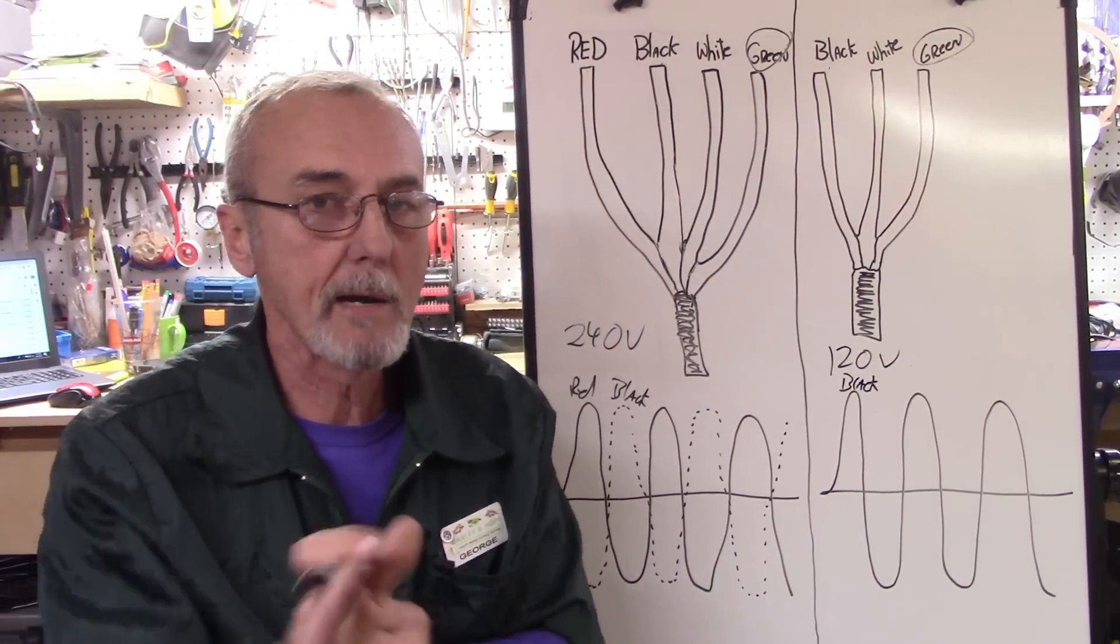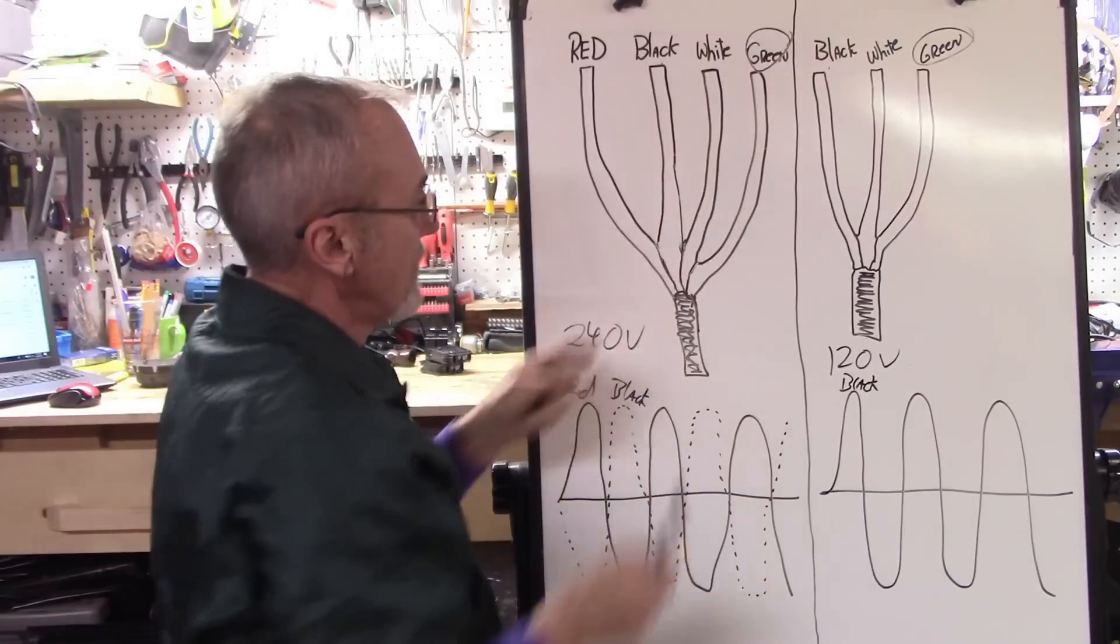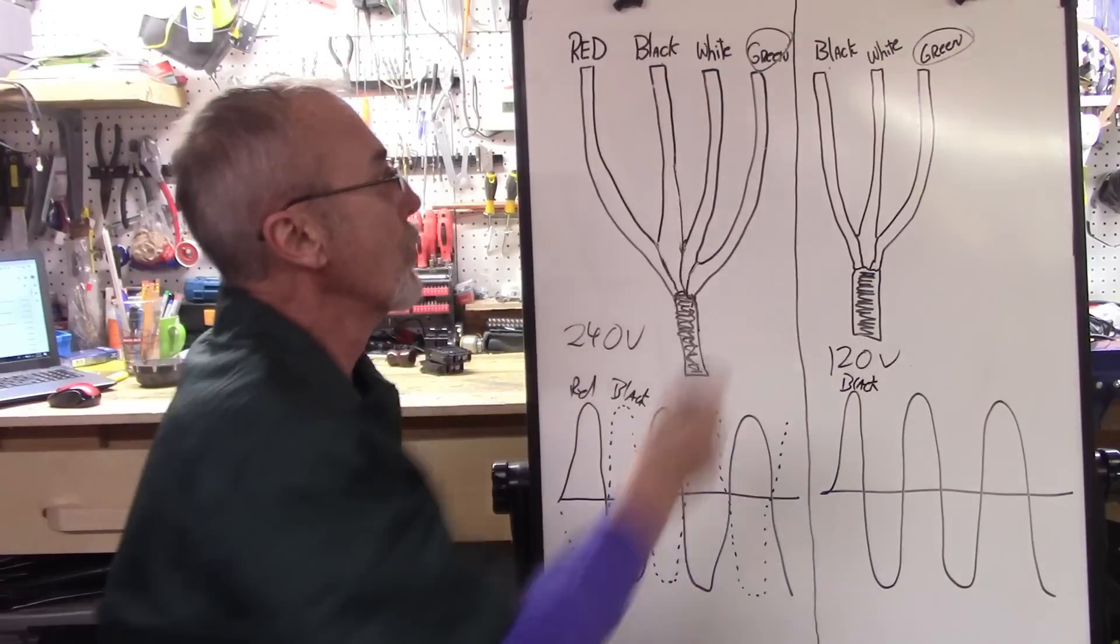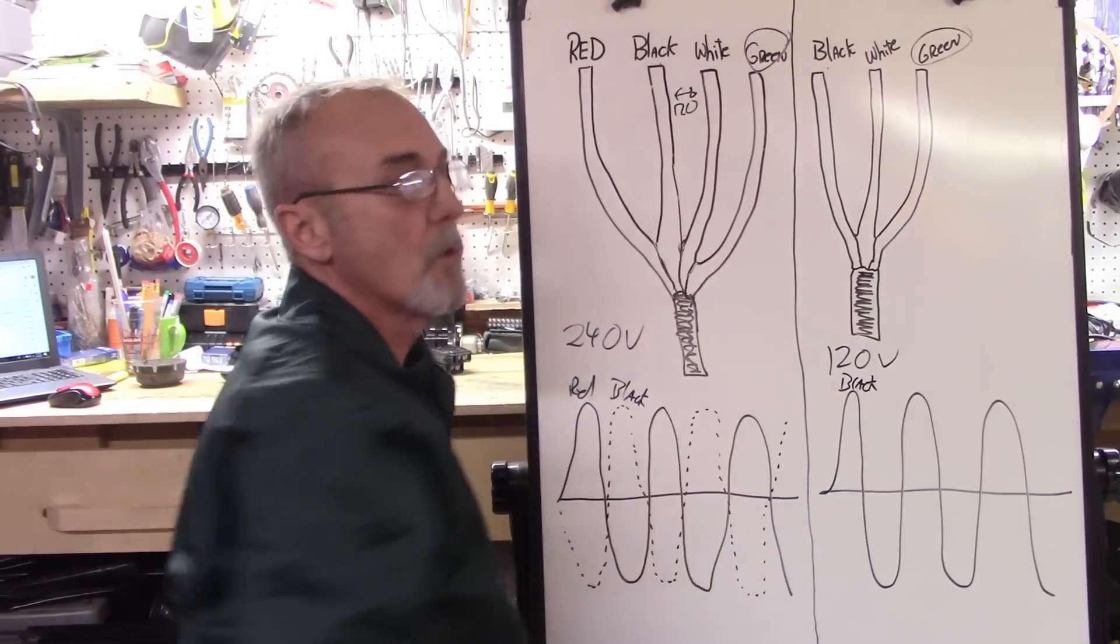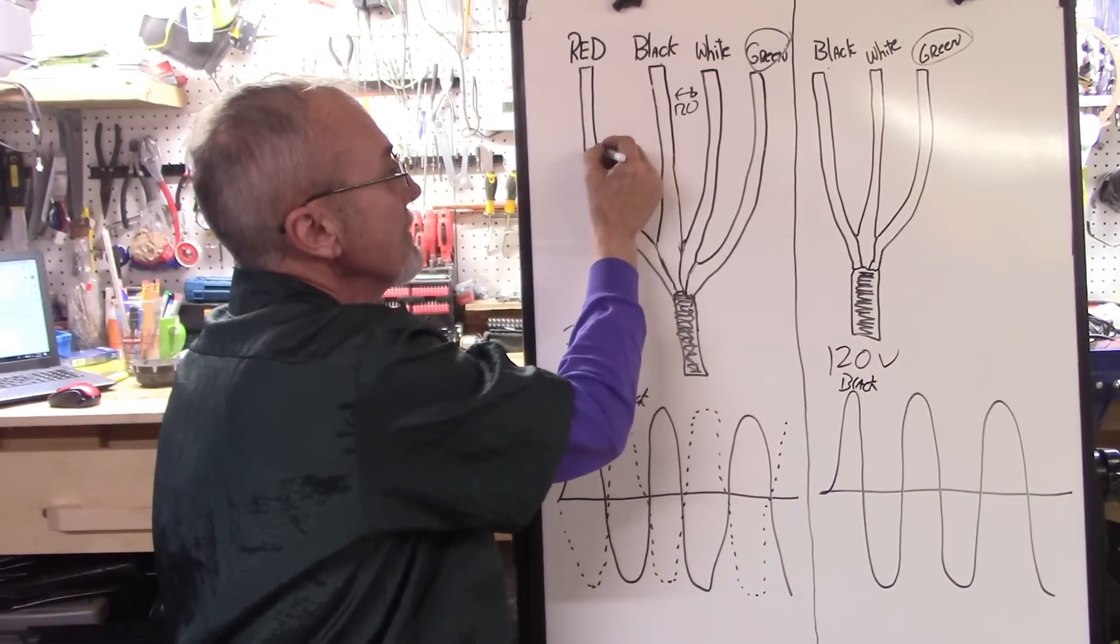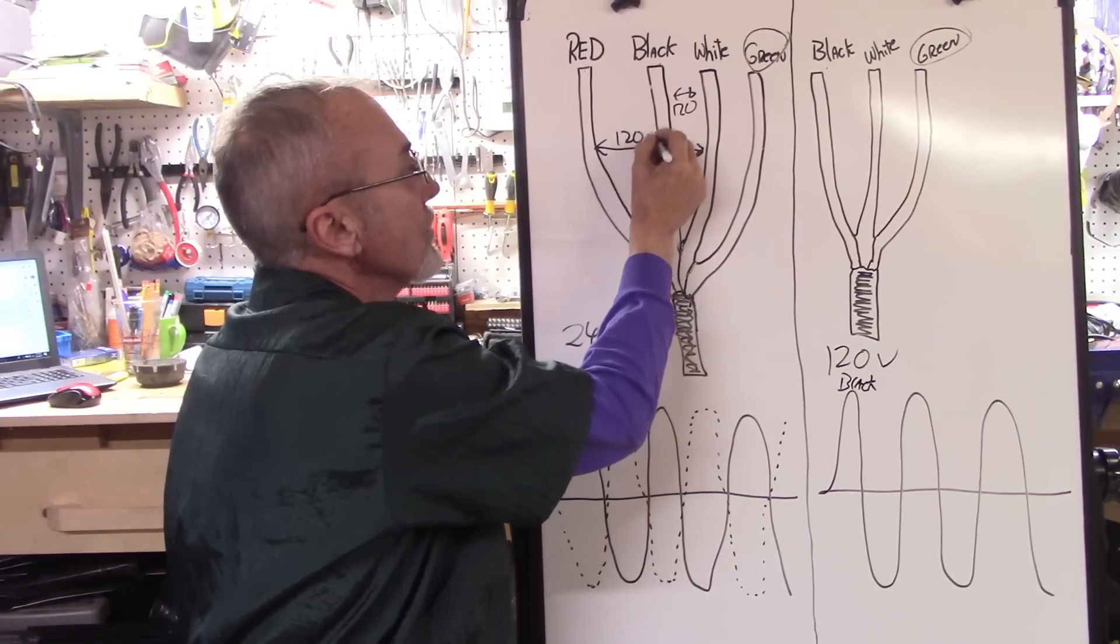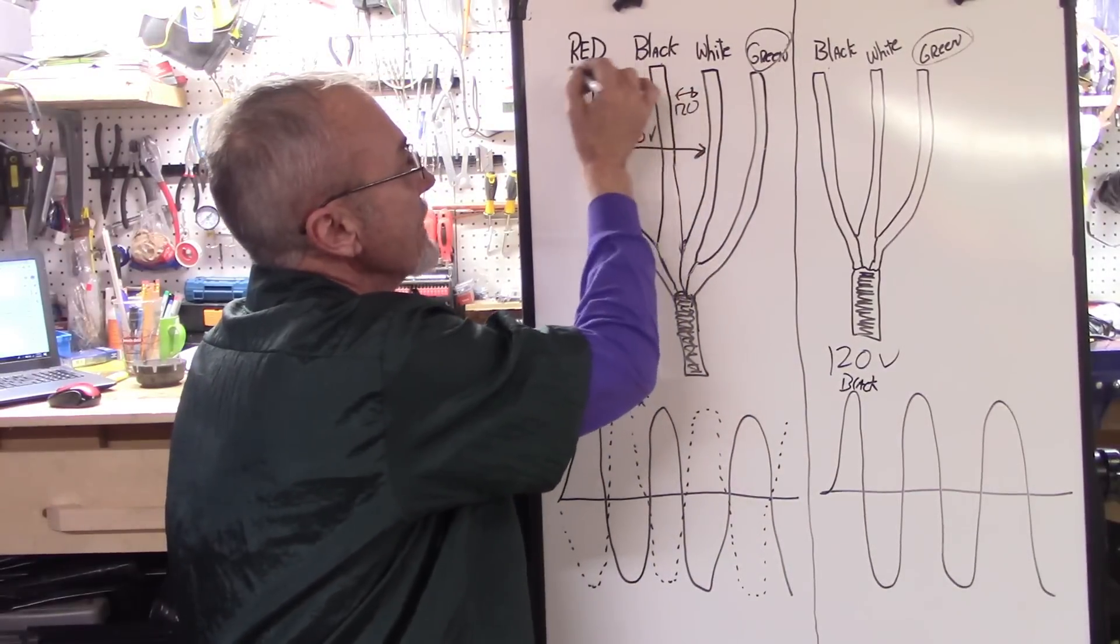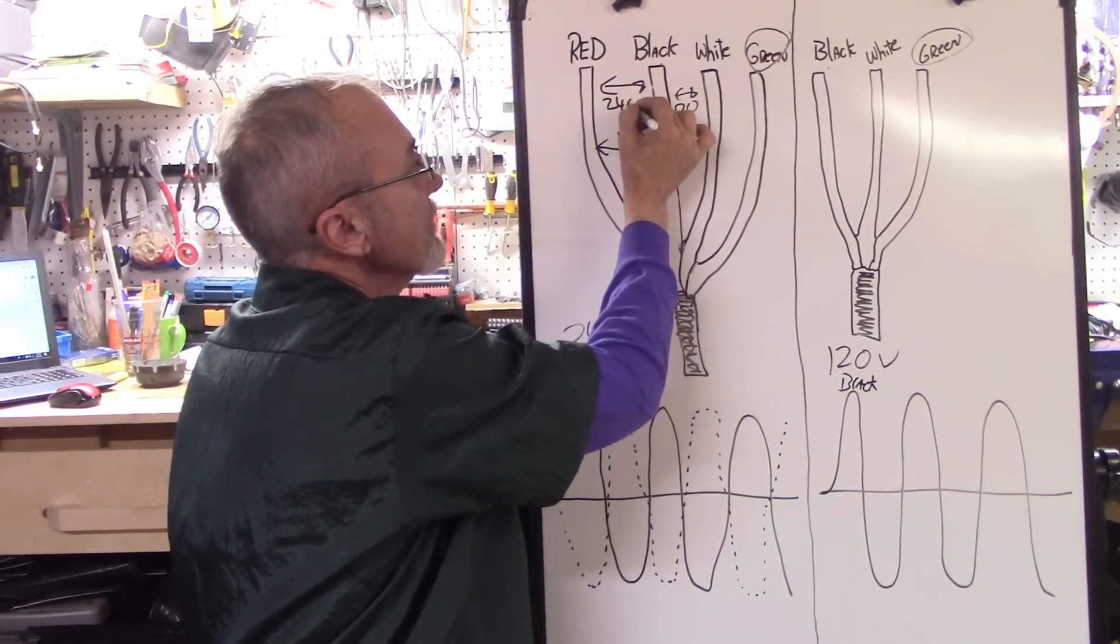A little bit more about ground later. But if we had a black and a white on this wire, because this is a 12-gauge 4-wire, if we used a black and a white, we would have between these two 120 volts. If we used just the red and the white, we would have 120 volts. If we use the black and the red together, is when we have 240 volts.